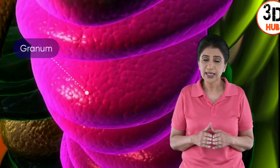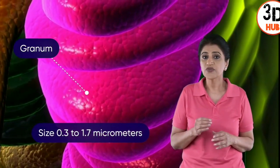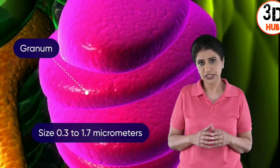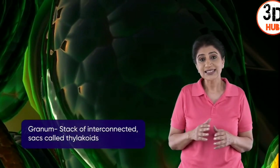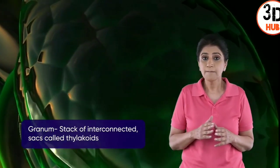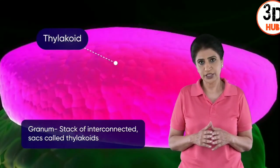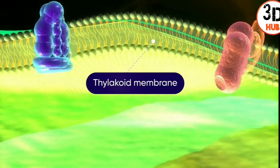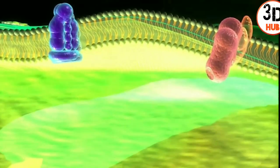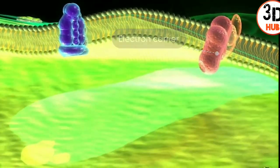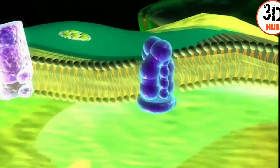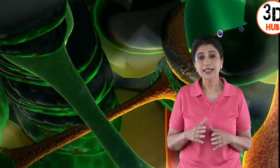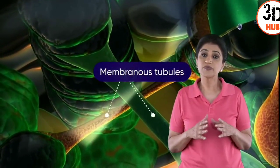The stroma contains enzymes of the dark reaction of photosynthesis, sugars, organic acids, ribosomes, and chloroplast DNA. Within the stroma, stacks known as grana are present, ranging from 0.3 to 1.7 micrometers. Each granum consists of a stack of interconnected membrane-bound sacs called thylakoids, whose membranes are embedded with enzymes, electron carriers, and chlorophyll pigments involved in light reactions.